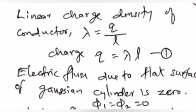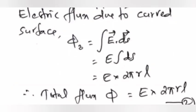Answer: Linear charge density of conductor λ equals q by L. Charge q equals λL. First equation: Electric flux due to flat surface of Gaussian cylinder is zero. Electric flux due to curved surface: